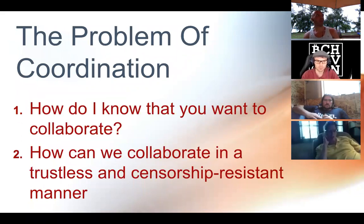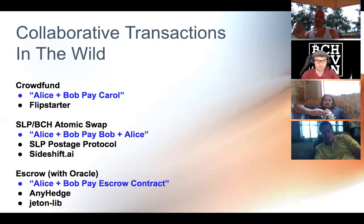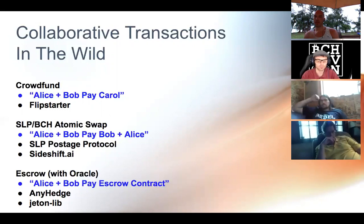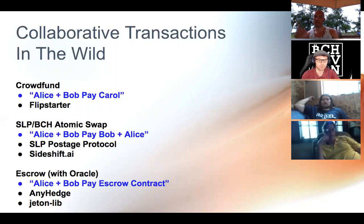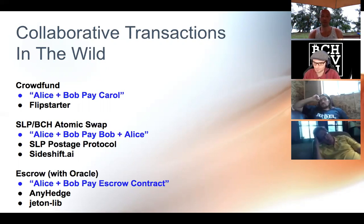One of the most important things about collaborative transactions is that they're trustless. If somebody collaborates with you on a transaction and then double-spends, no harm, no foul — they can't take your money. In the SLP-BCH atomic swap, them getting their money is dependent upon you getting your money. There's basically zero incentive to double-spend, which is quite good.